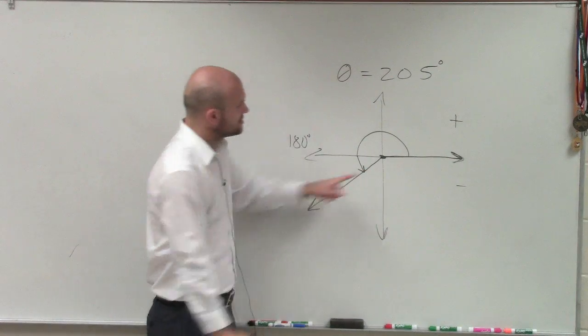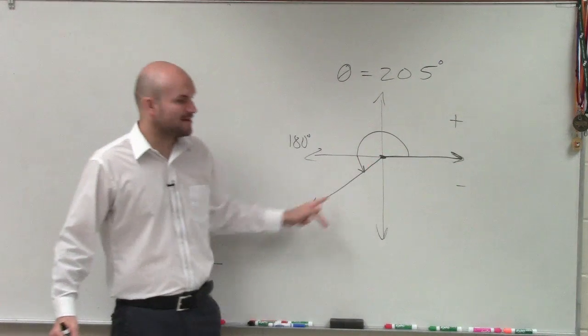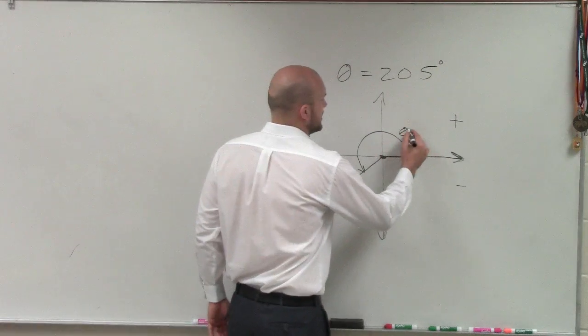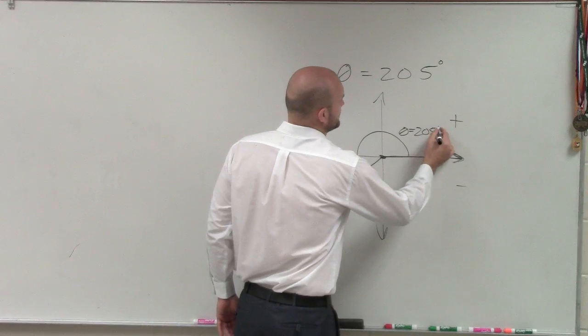So that's my initial side of my angle. That's my terminal side of my angle. This is roughly a measurement of 205 degrees, which we call theta. Theta equals 205 degrees.